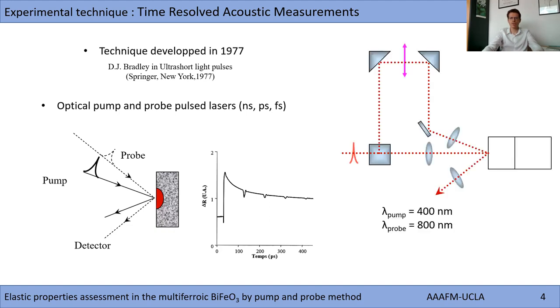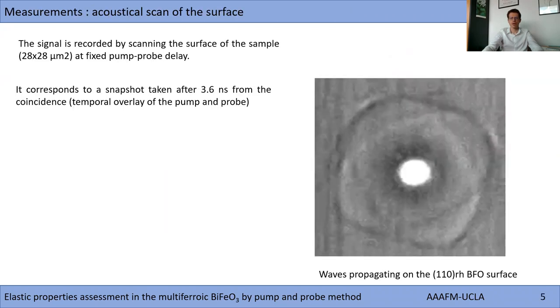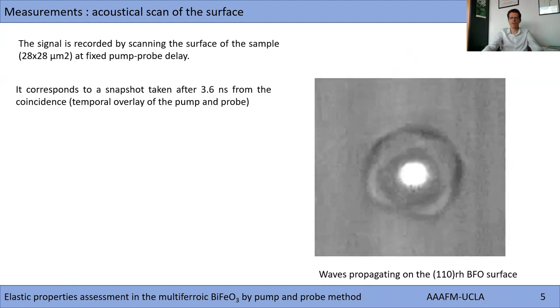Acoustic measurements were performed using a standard stabilized Michelson interferometer sensitive to the perpendicular surface displacement. A 12 nanosecond maximum pump-probe time delay is achieved using a mobile reflector mounted on a translation stage. Both the pump and probe beams are focused with a microscope objective with a numerical aperture of 0.9 fixed on a piezoelectric stage. This figure shows the propagation of the acoustic wave on the bismuth ferrite surface. The signal is recorded by scanning the surface of the sample at fixed pump-probe delay. It corresponds to a snapshot taken at 3.6 nanoseconds from the coincidence.